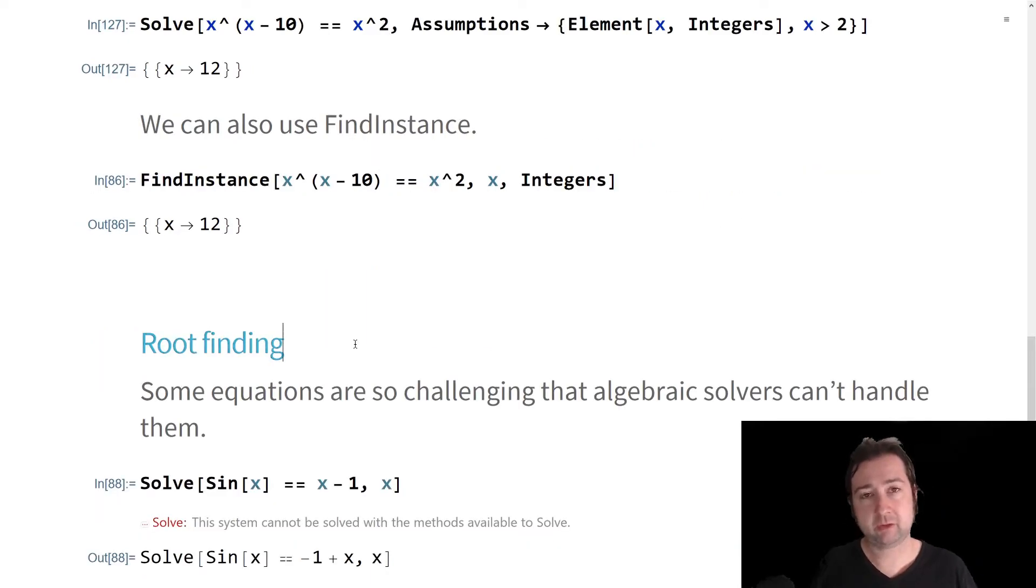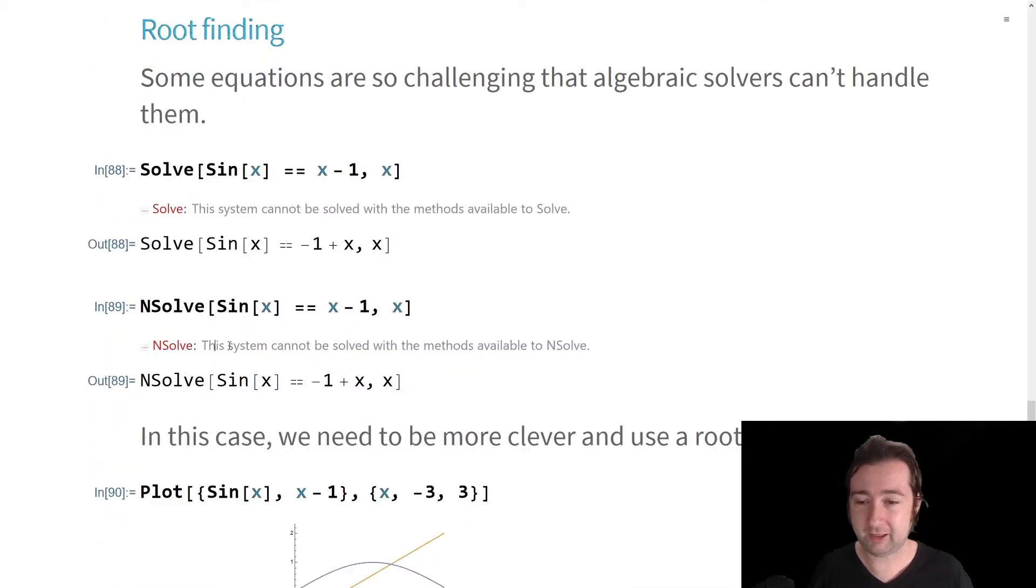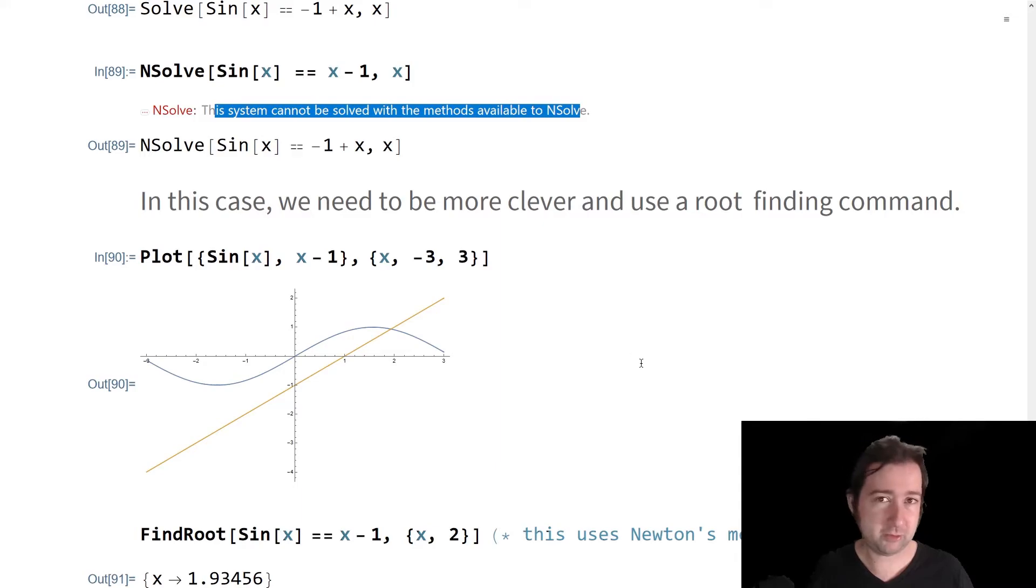Some equations are so challenging that algebraic solvers just can't handle them. We were talking about transcendental equations before. Here's an example of one, a pretty easy one, it looks like sine x equals x minus one. If I feed that into Solve, it just tells you I can't do it. That's not a very heartening answer. Then you think, I'm going to use a numerical solver, because I bet I could solve this numerically. And it tells you, I can't do that either. I also can't solve it numerically.